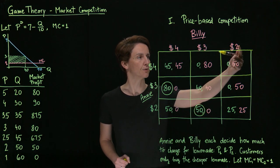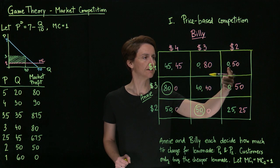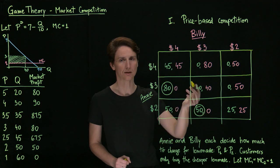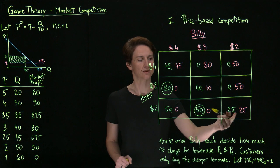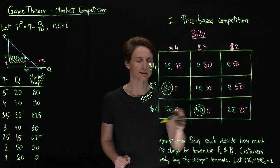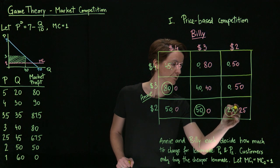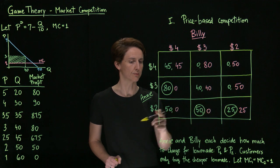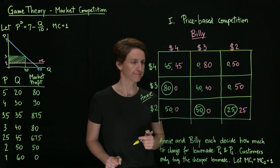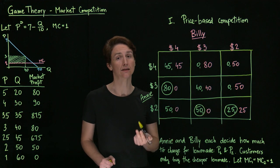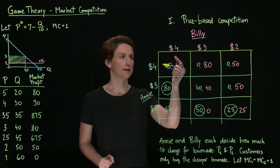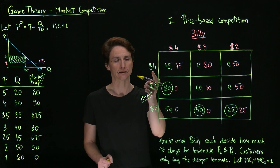Finally, if Billy sets price at $2, then Annie's payoffs would be $0 if she prices above $2 in either case, or $25 — which is half the market profit — if she matches his price at $2. $25 is the greater number, so her best response is to match Billy's price at $2. Analyzing her best responses, we can see that Annie doesn't have a dominant strategy. However, she does have a dominated strategy, and that's setting price at $4 — in none of these three cases is that her best choice.